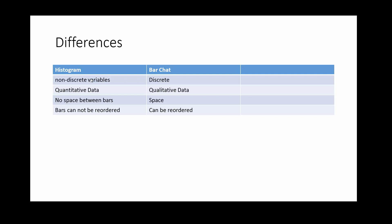No space between bars. And in bar chart, you have space between the different bars. For histogram, the bars cannot be reordered. You cannot reorder them. You cannot change the order. But in bar chart, you can certainly do.